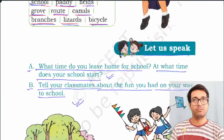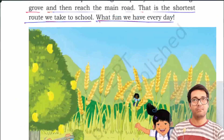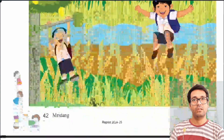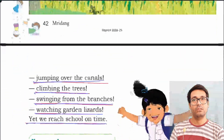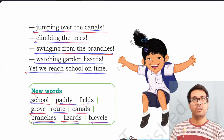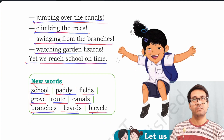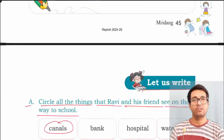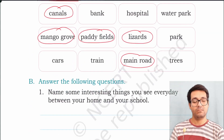Let's see the chapter once again. They pass through paddy fields, mango grove, and then reach the main road. They see canals, branches, and trees. Trees are also included among the things they see.